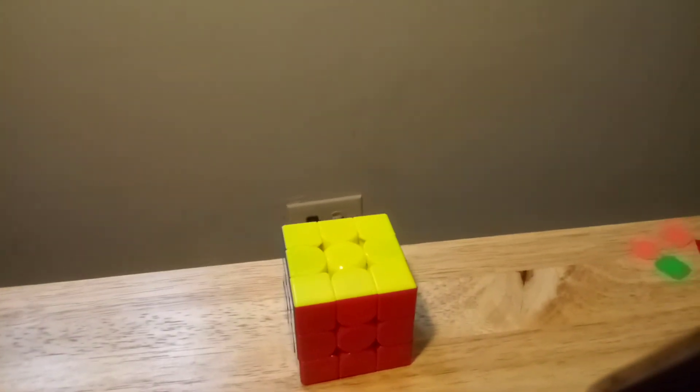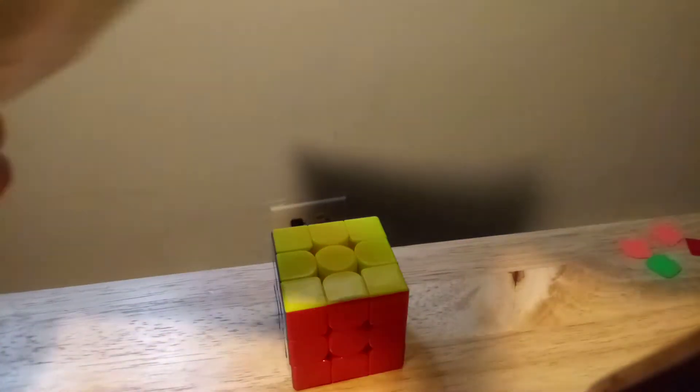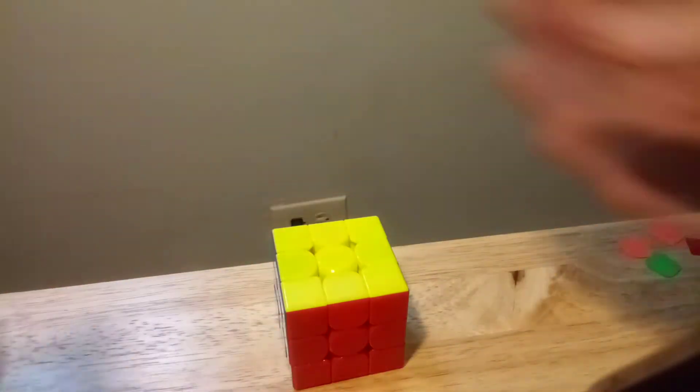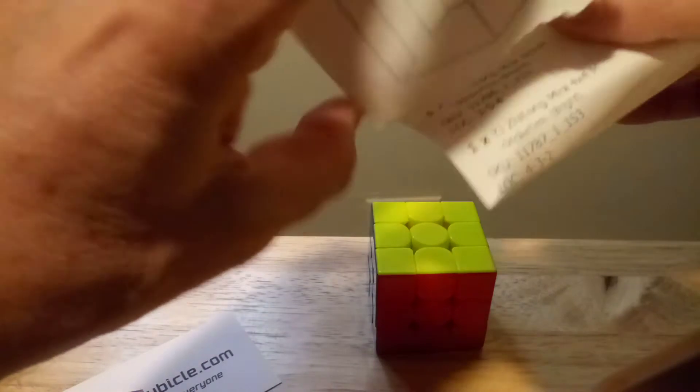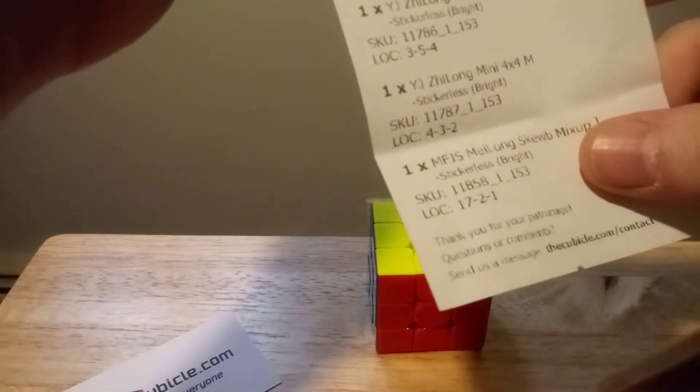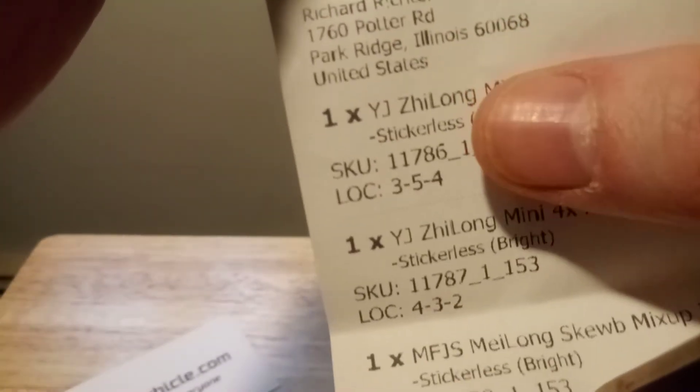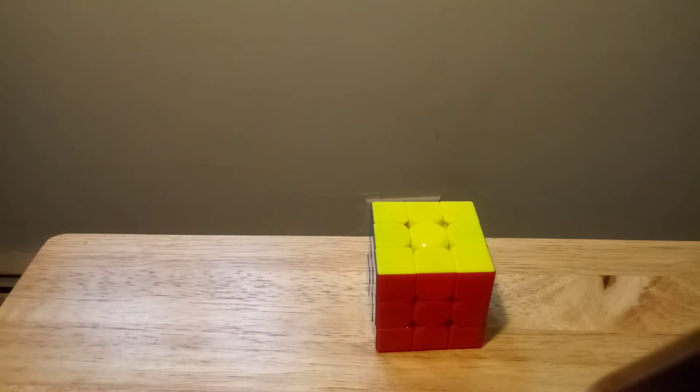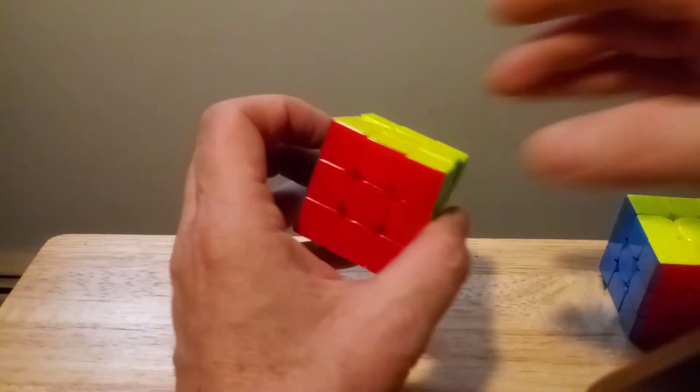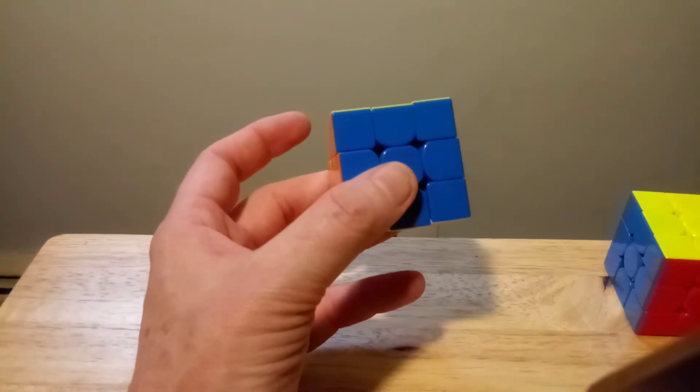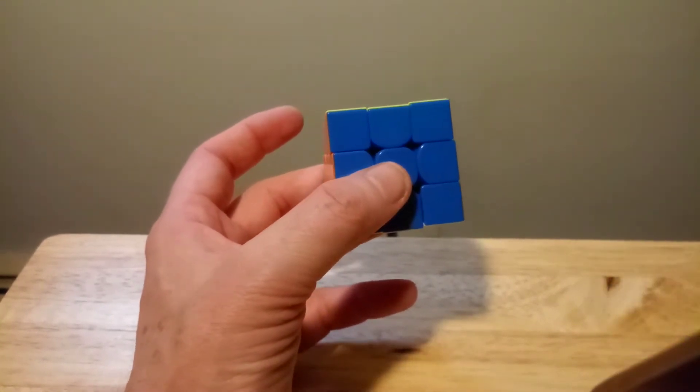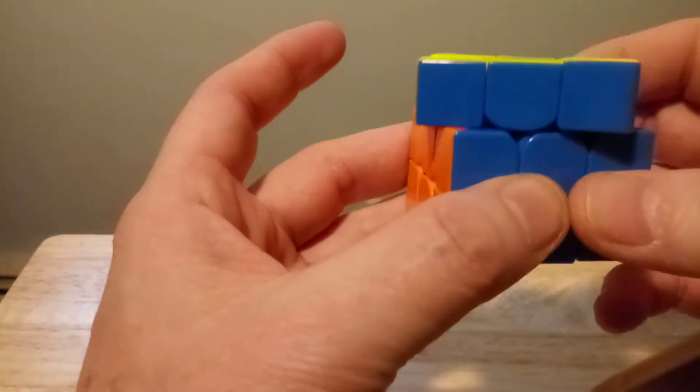Give me one second. I'm going to look at the receipt down here. Let me get the receipt out so I get the name of it. Sorry about that. Let's see. It's the YJ Z-Long. Yeah, the Z-Long here. So, that's the 3x3 Mini. I also have the Vulk. I've had this for about a year and a half. The Vulk Mini. And this one is really amazing. I love this one. It was excellent out of the box. The Vulk Mini.